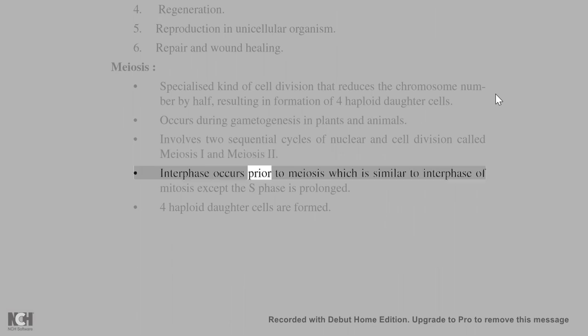Interphase occurs prior to meiosis, which is similar to interphase of mitosis except the S phase is prolonged. Four haploid daughter cells are formed.